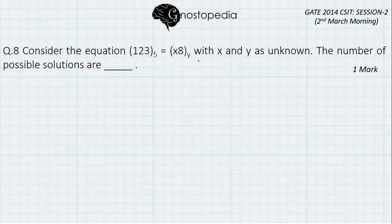Consider the equation (123)₅ = (x8)_y with x and y as unknown. The number of possible solutions are asked. Let us keep this question aside for a second.